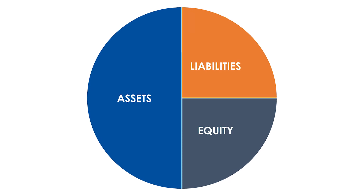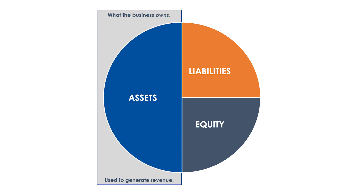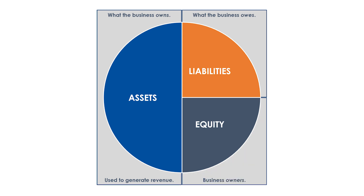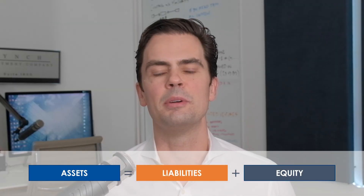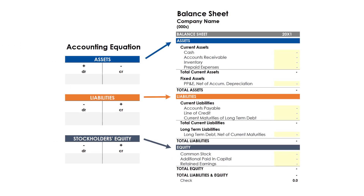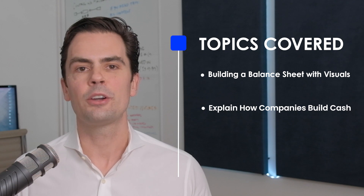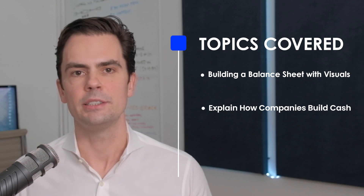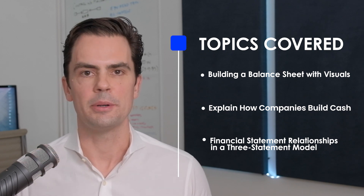Assume that this circle represents a business in its entirety and that the circle can be divided into three parts. First, you have a company's assets, which is what the company uses to create revenue. And on the other side, we have the means of owning these assets, which include the company's liabilities and stockholders' equity. These three components are visible in the accounting equation with assets equal to the sum of liabilities and stockholders' equity. Recall that the balance sheet is a formal presentation of the accounting equation. In this video, we're going to answer that question by first building a balance sheet with visuals and walking through some definitions. Then we will dive into the equity account to explain how companies build cash on their balance sheet. And finally, we will explore how the three financial statements relate to one another with diagrams and a three statement model.